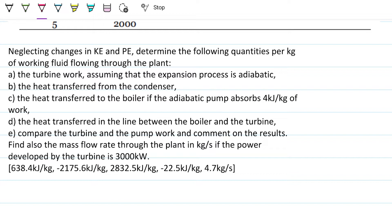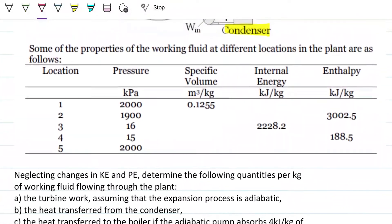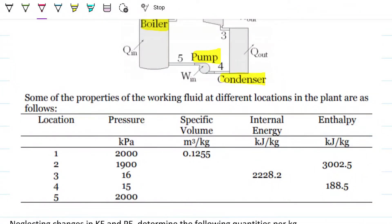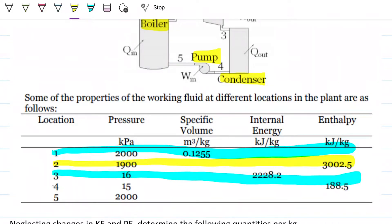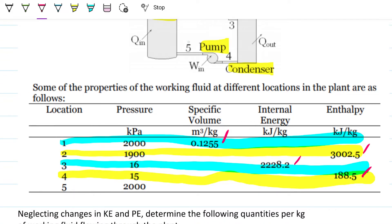This isn't a complicated problem — there are just a lot of small steps. For each state, notice that we have two thermodynamic properties, which means each state is completely defined. The only exception is state five, after the pump, where we only have pressure. However, we can calculate a second property for state five using the known pump work from state 4 to 5 and the heat input from state 5 to 1.